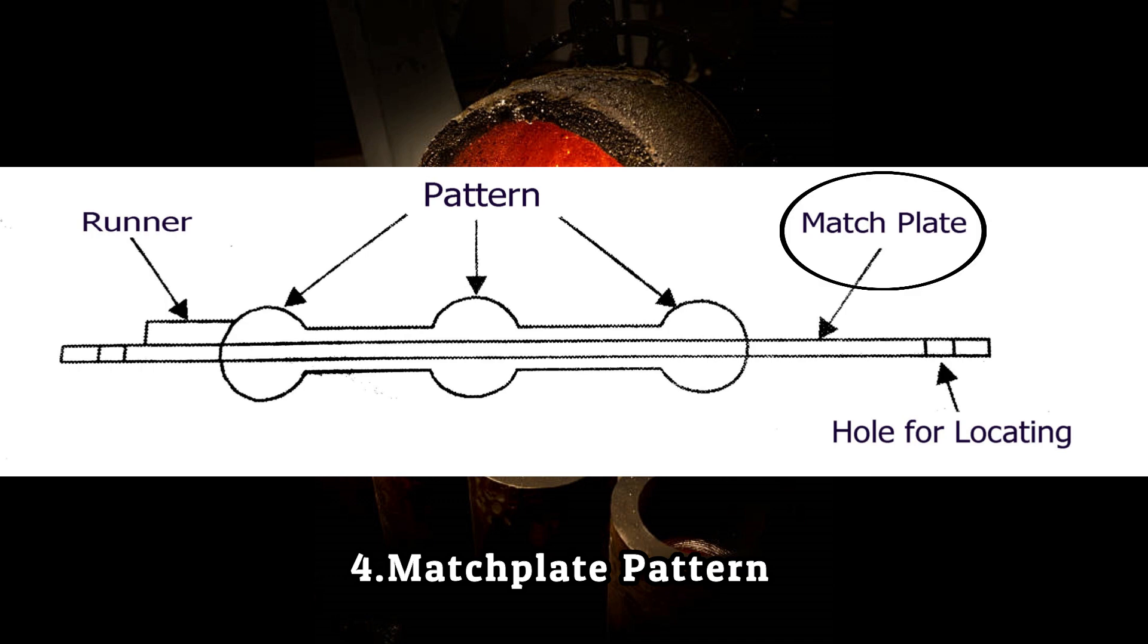These will make it easy to cast any shape with high production rate. Mostly runners, gates, etc. are also mounted on the same plate which makes mold making work easier. These patterns are used for mass production.